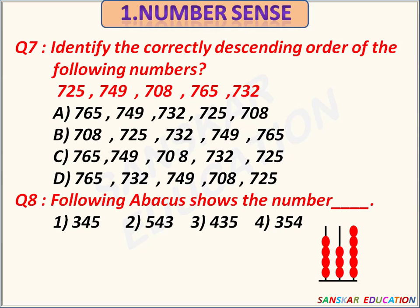Identify the correctly descending order of the following numbers. Numbers are 725, 749, 708, 765, 732. Options are given. The correct descending order of the given numbers is Option A.